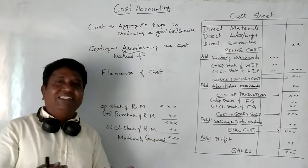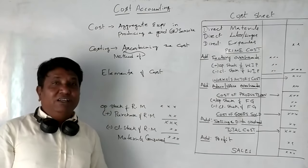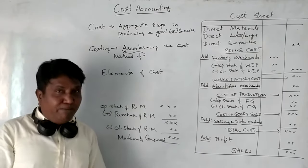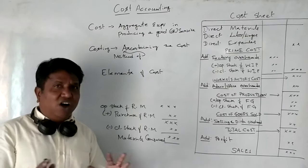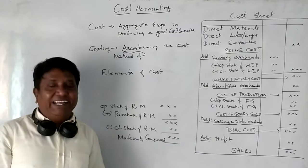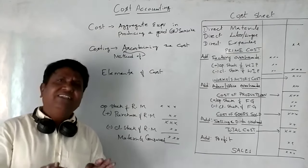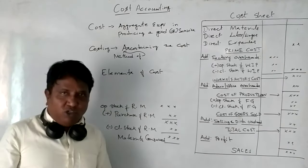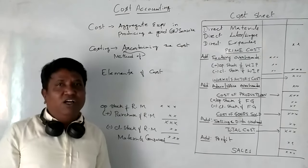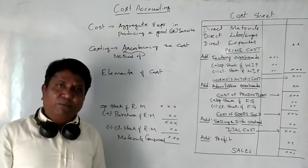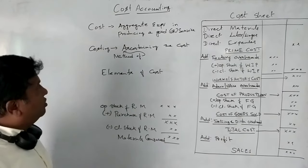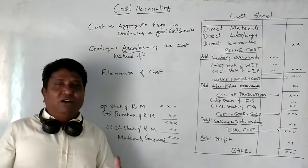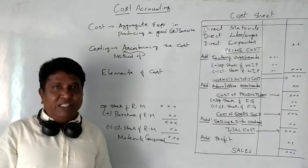What is Cost Accounting? Cost Accounting is nothing but recording, classifying, and summarizing all cost accounting details in a systematic manner in order to find out the total cost and to find out the profit.